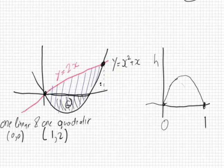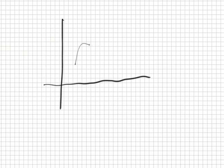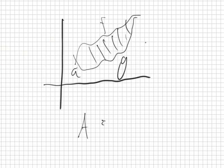I've made a new function which is the difference between the heights of the two curves, and I've drawn it. If one function F is always above another function G, and you want the area between them from A to B, all you have to do is integrate F minus G from A to B. That gives you the area of that piece.